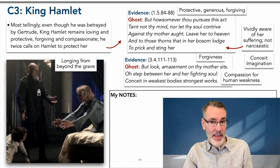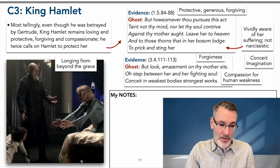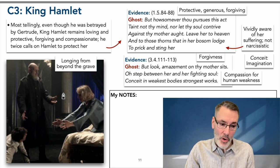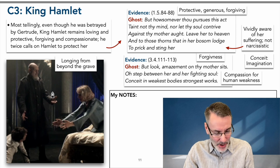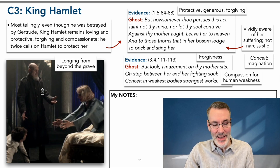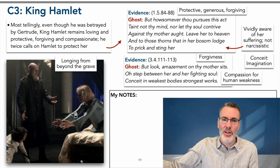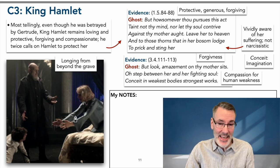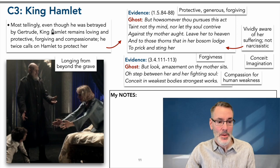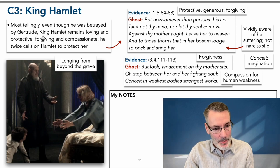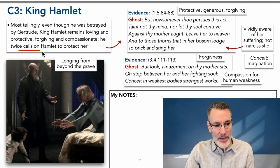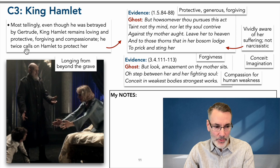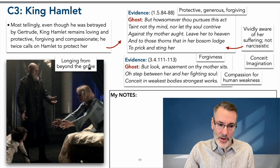Most tellingly of all are the actions of the ghost himself. If she did have an affair with Claudius while he was alive — which I'm going to argue she probably did — he should be angry, he should let her rot in hell, tell Hamlet to tear her to shreds. But he doesn't. He protects her from the winds of heaven. Even though he was betrayed by Gertrude, King Hamlet remains loving and protective, forgiving and compassionate. He twice calls on Hamlet to protect her — and when a writer puts something in twice or three times, you know you're onto something.